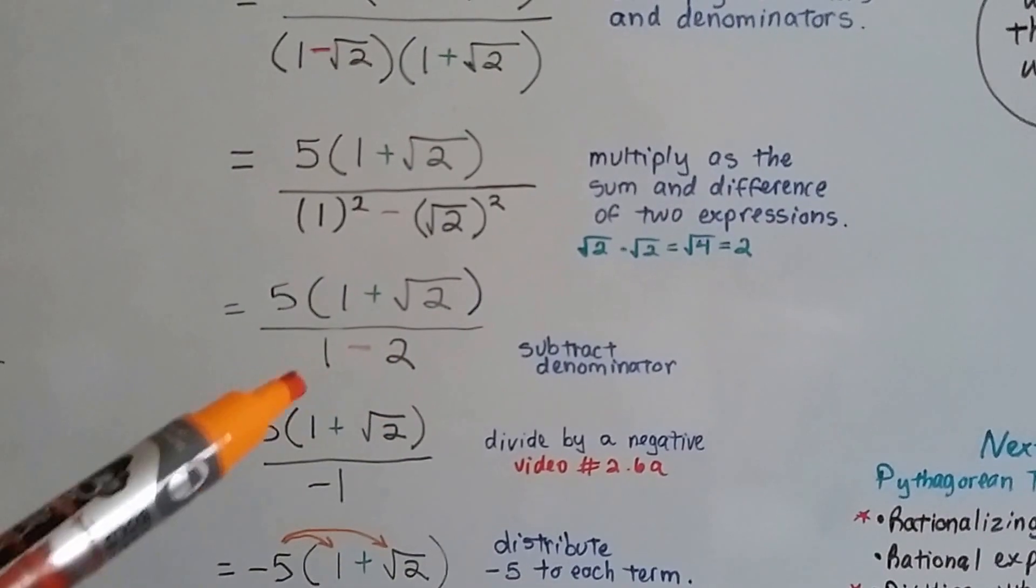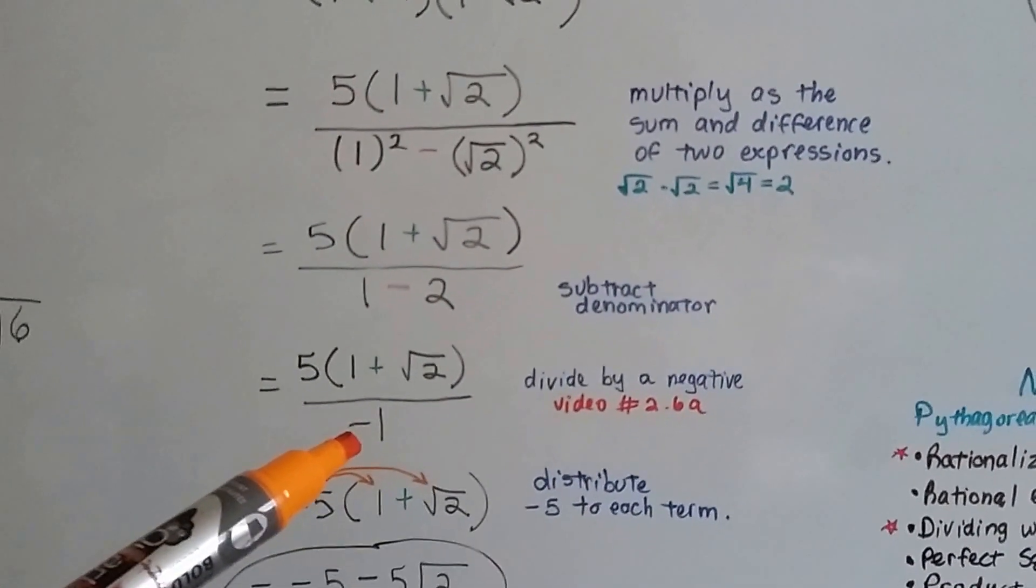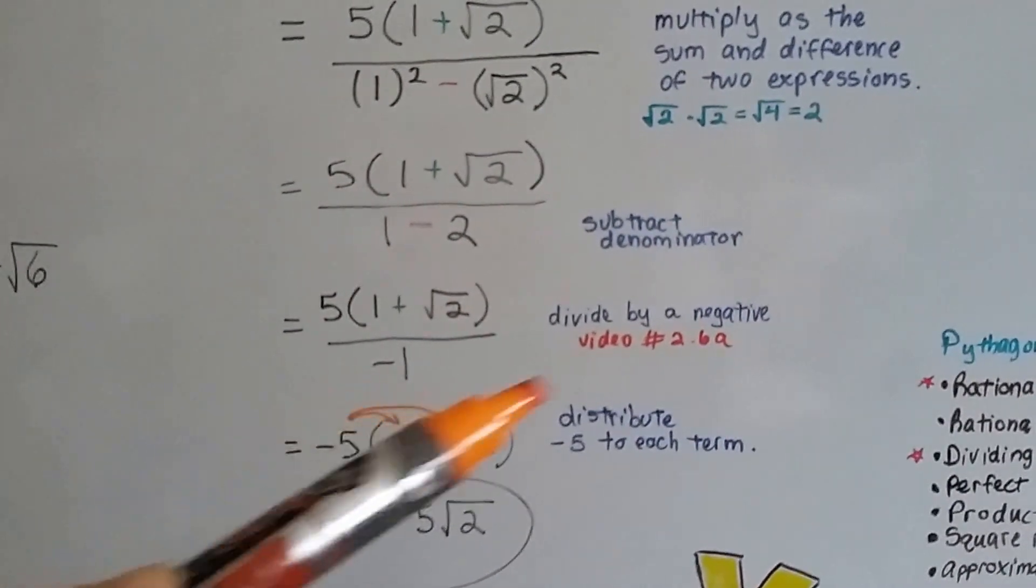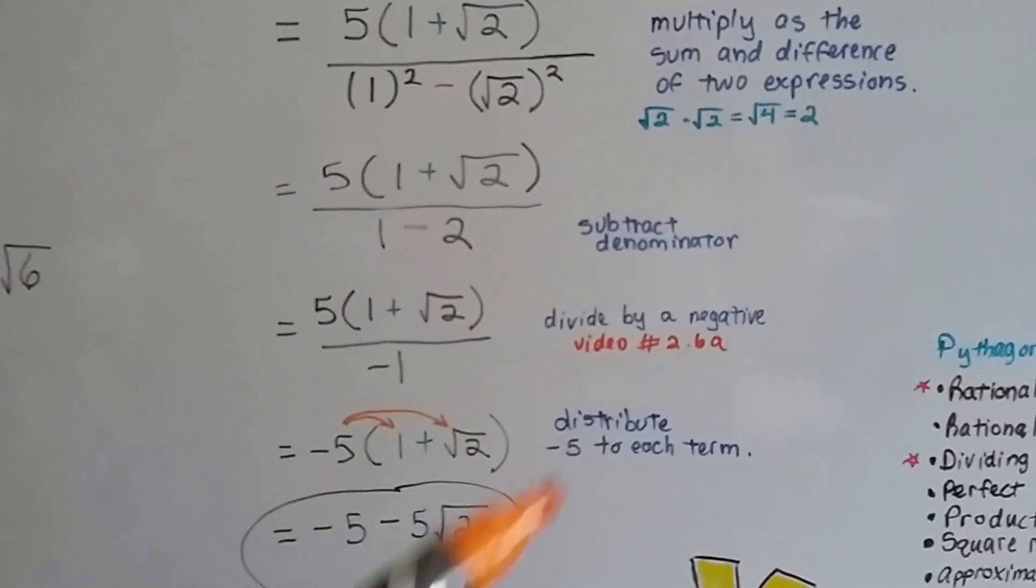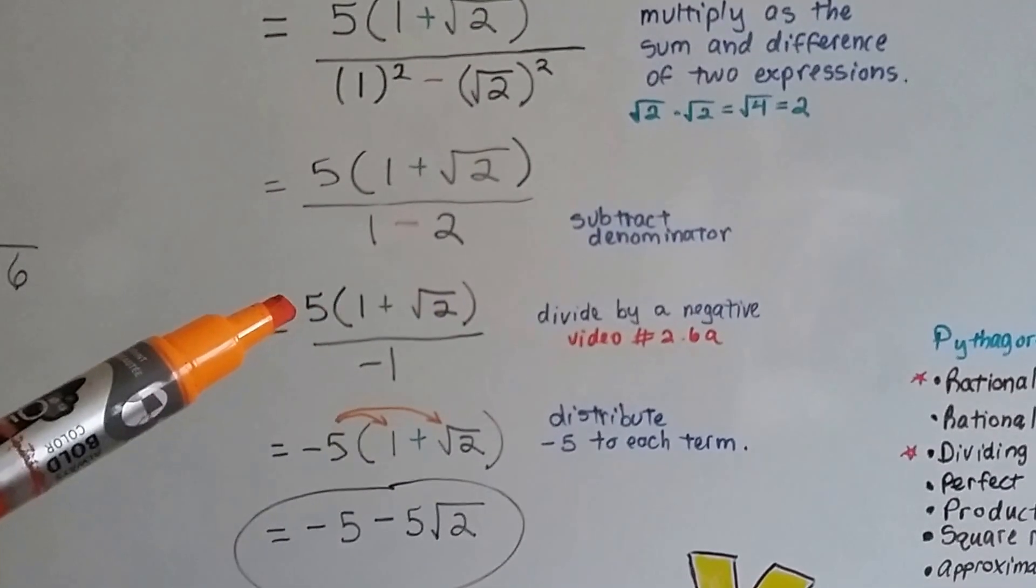Now, we just subtract this denominator and we get a negative 1. 1 minus 2 is a negative 1. And remember, when you divide by a negative, we did that back in chapter 2. I'll have a link to that in this description.